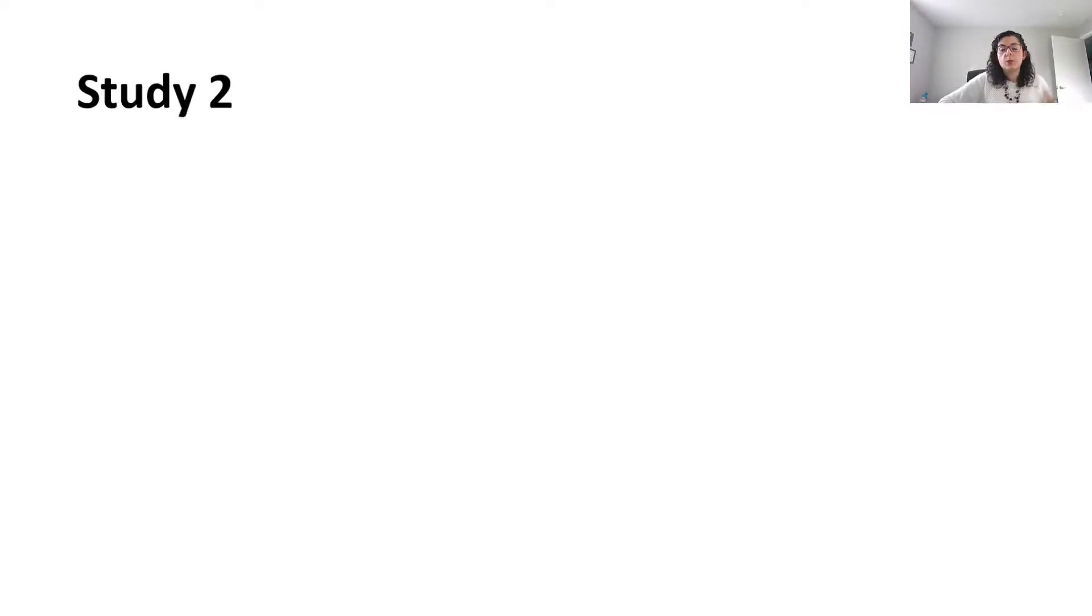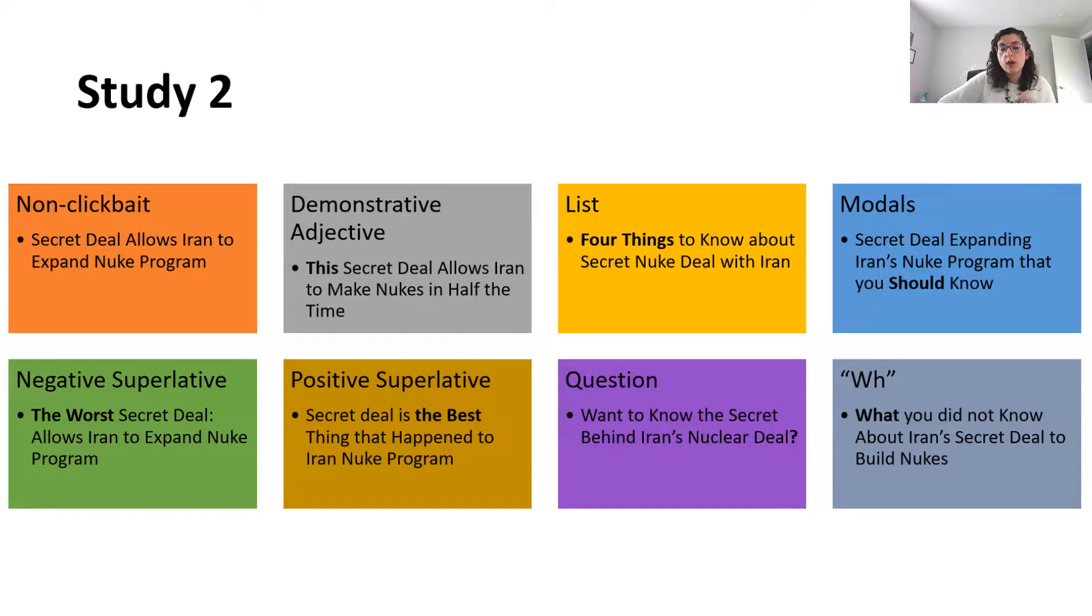So we conducted study number two. And here, we selected only one headline, and a trained journalist systematically varied the headline to contain only one of the clickbait characteristics. And again, no significant differences.